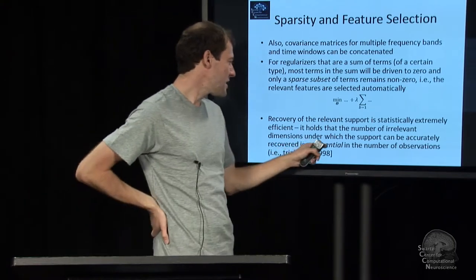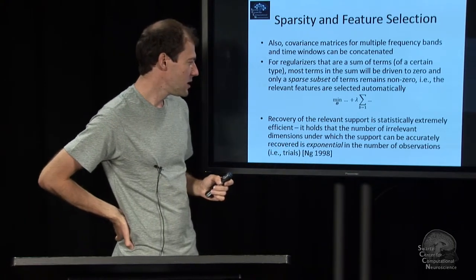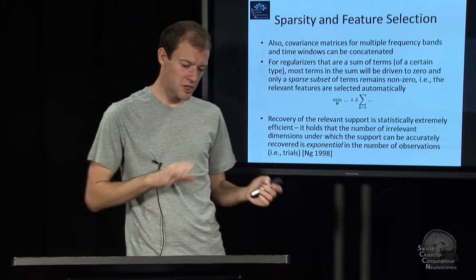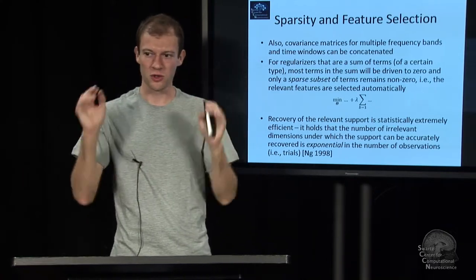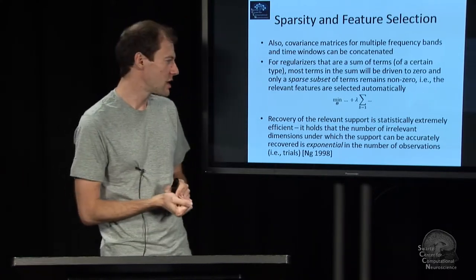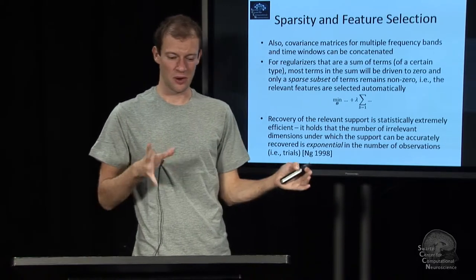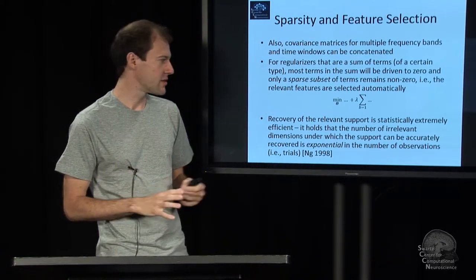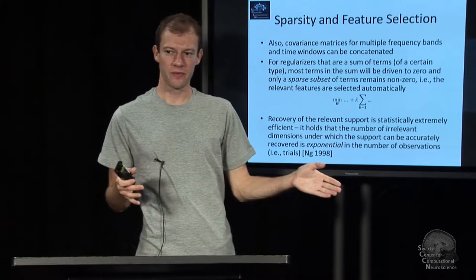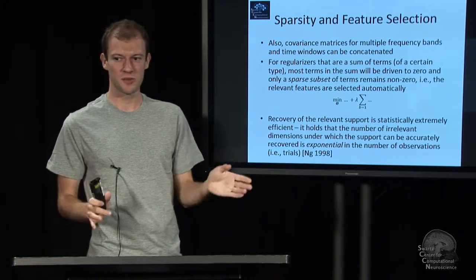And so that is, in a sense, a possibility to overcome the so-called curse of dimensionality. You can have tons of features, millions in fact, as long as you can frame it such that you only need a few of them, that somehow it's sparse in some sense.